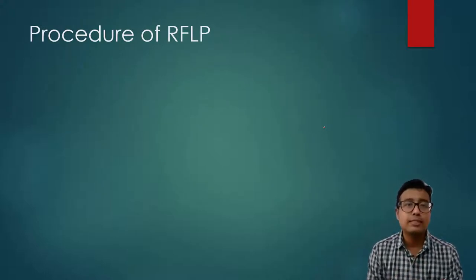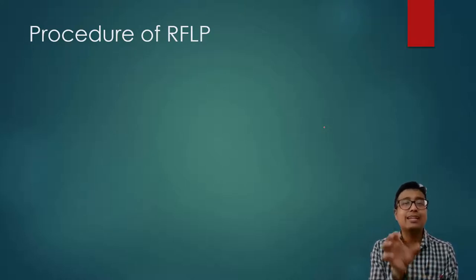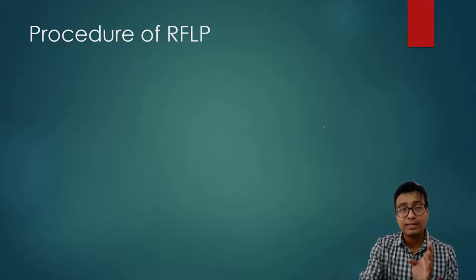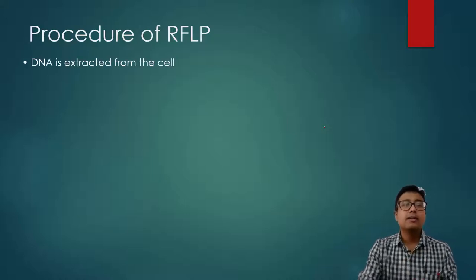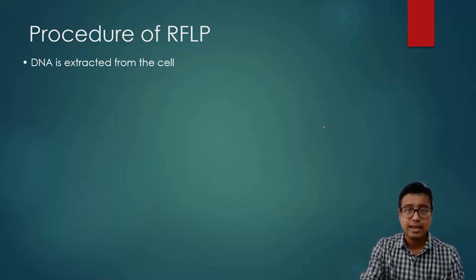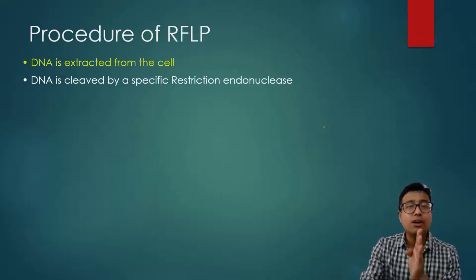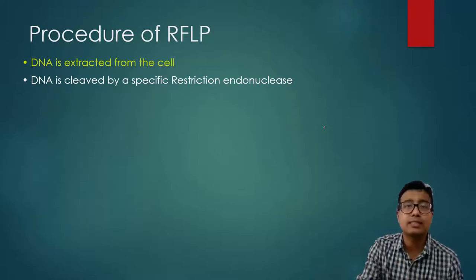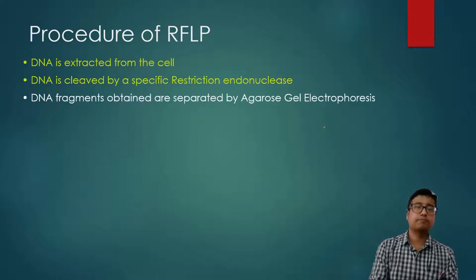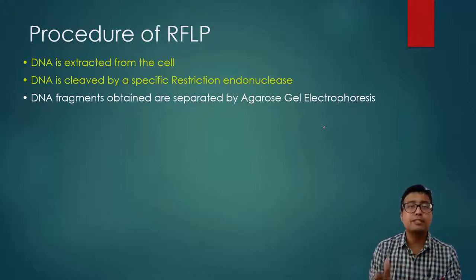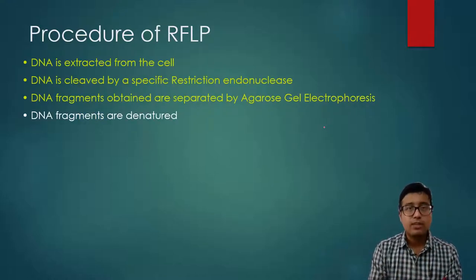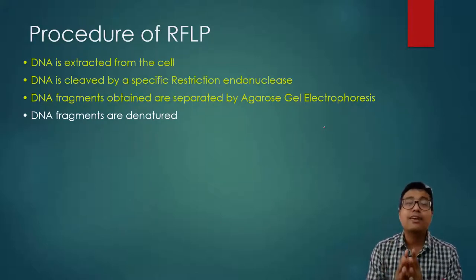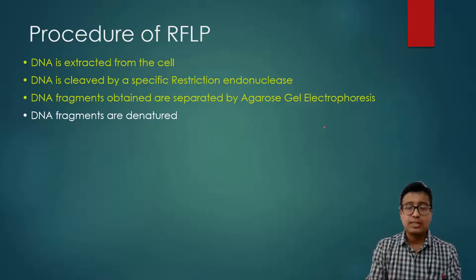In a short note, you need to write the highlights of the RFLP procedure. First, DNA is extracted from the cell. It is then cleaved with the help of specific restriction endonuclease enzymes. The DNA fragments obtained are separated by agarose gel electrophoresis, which is then denatured using reagents such as urea or guanidinium chloride.